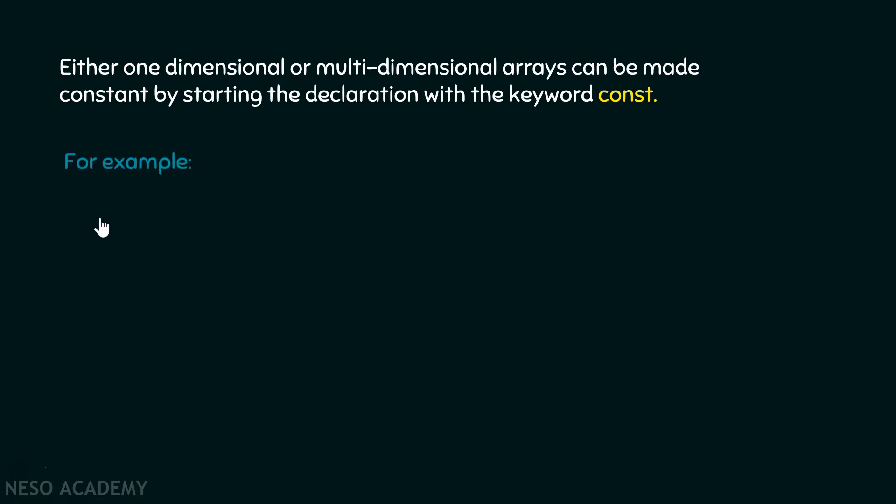For example, suppose we have this array and we want to make it constant. By simply putting this const keyword in front of this array, we can make this array constant. That is, we cannot change these values anywhere in our program.